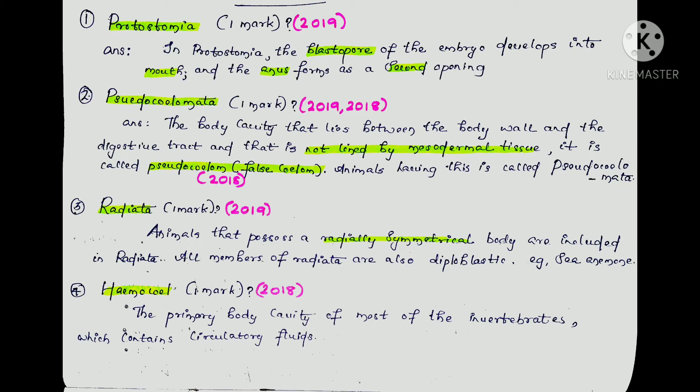Let's look at the next question from 2019 and 2018. The body cavity that lies between the body wall and the digestive tract, which is not lined by mesodermal tissues, is called a pseudocoelom or false coelom. Animals having this type of coelom are called pseudocoelomates.